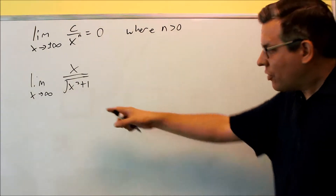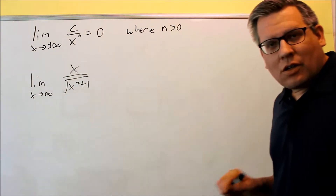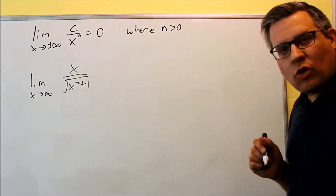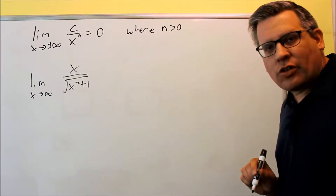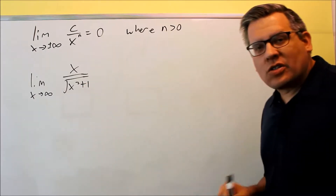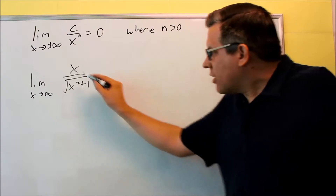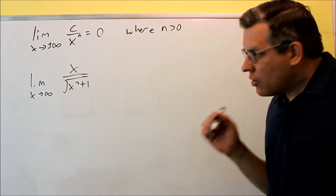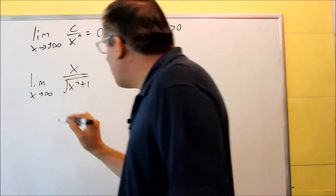This time we have a square root completely in the bottom. We have to be careful when we divide top and bottom by the highest power in the denominator. The highest power in the denominator is not going to be x squared, because it's actually the square root of x squared. So let's talk about what we can do here.